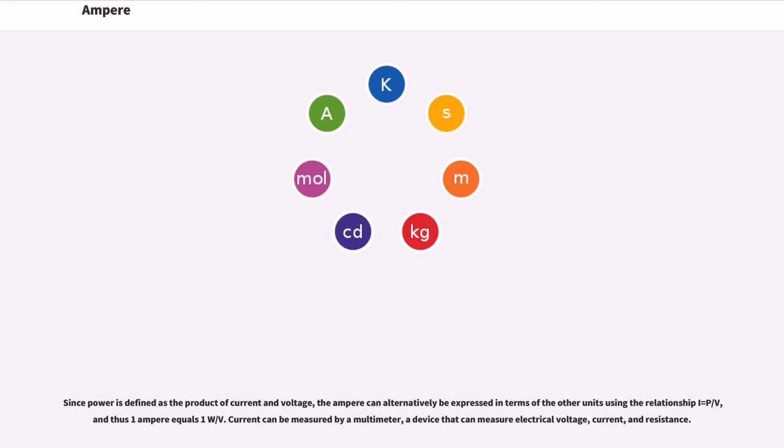Since power is defined as the product of current and voltage, the ampere can alternatively be expressed in terms of the other units using the relationship I equals P slash V, and thus one ampere equals one W/V. Current can be measured by a multimeter, a device that can measure electrical voltage, current, and resistance.